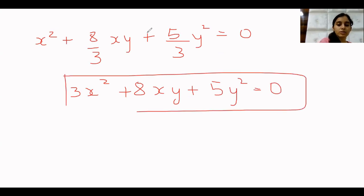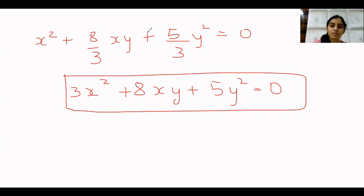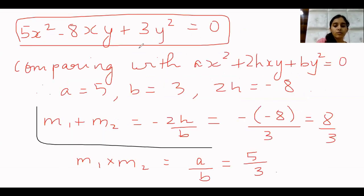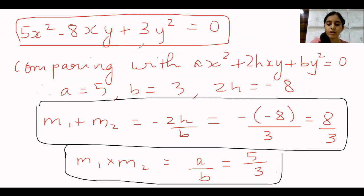So 3x² plus 8xy plus 5y² equal to 0 is the combined equation of the lines perpendicular to the given combination and passing through the origin. That is your final answer for question 3, first part. Questions 3 second and third are of a similar pattern — exactly the same way. Compare with the standard combined equation, then use M1 plus M2 equals minus 2h upon b, and M1·M2 equals a upon b. These two equations are very important in this chapter.